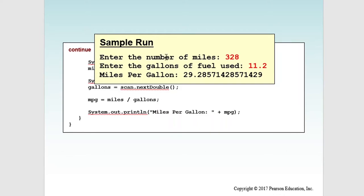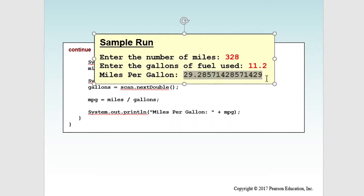In a sample run, the user entered 328 miles and 11.2 gallons of fuel used, and the program outputs the miles per gallon. Here's a simple breakdown of the Scanner class — up here are the different types of constructors that you can call. For this course, we're only going to pass in System.in.